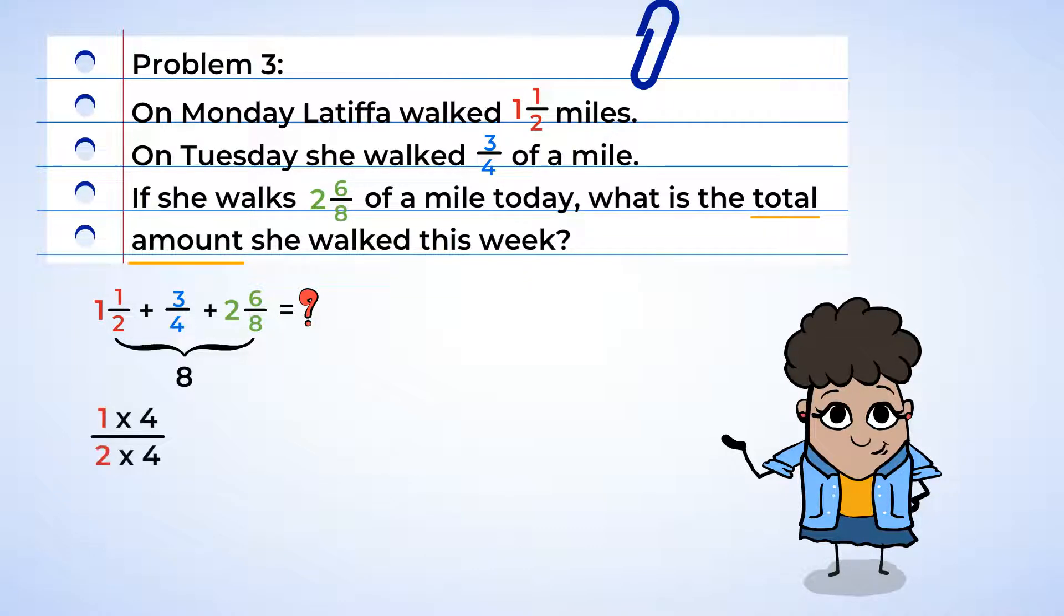Now we can multiply ½ by 4, but remember to multiply both the denominator and numerator, and we get 4/8. Then, in order to get a denominator of 8 in ¾, we're going to multiply by 2, and we end up getting 6/8. And the fraction of 6/8 stays as it is.